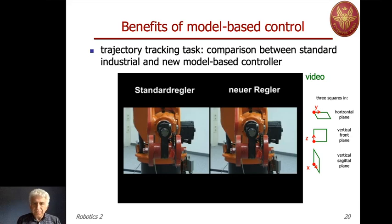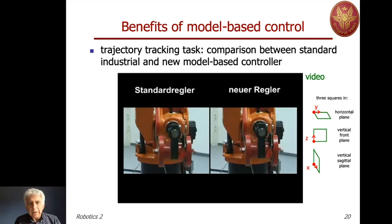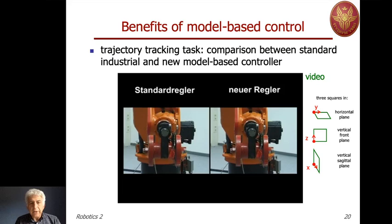Let's look again at how it works: first square, second square, and third square. You can see that you can tell the difference visually, so you can imagine that in terms of dynamic accuracy, there is a huge gap between the two.